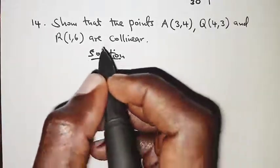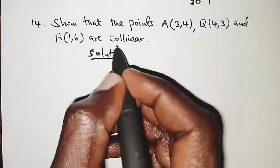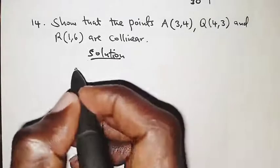In order to show that points are collinear, what that simply means is that we show that the points are lying on a straight line.